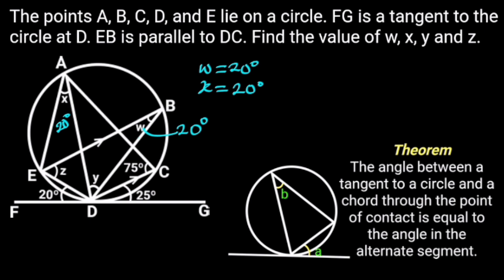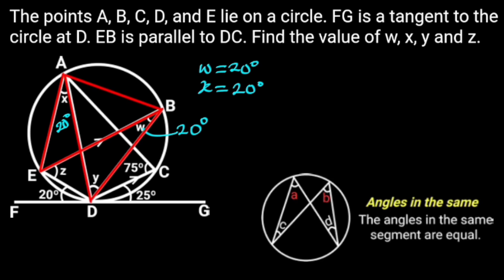Also, we can find X from another circle theorem. Notice that angle X is in the same segment as angle W. From the circle theorem of angles in the same segment, it states that angles in the same segment are equal. From this figure, A is equal to B because both angles are in the same segment. Also, C is equal to D because both angles are in the same segment. Hence, X is equal to W, which is 20 degrees, and the reason is angles in the same segment.